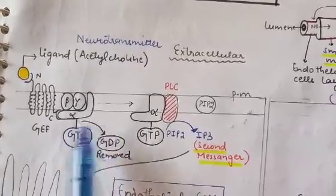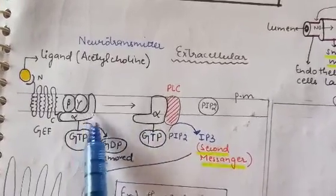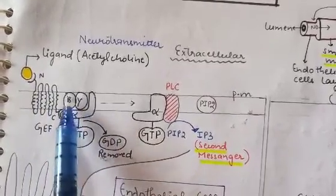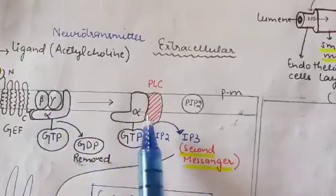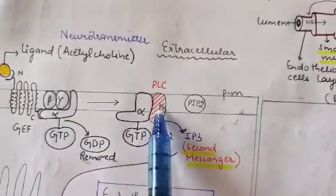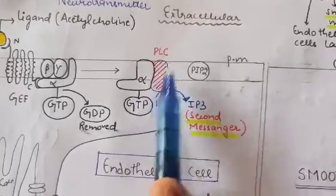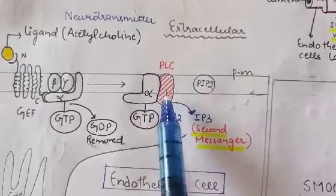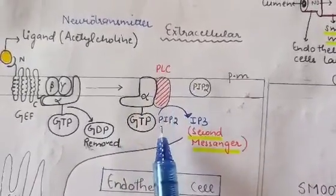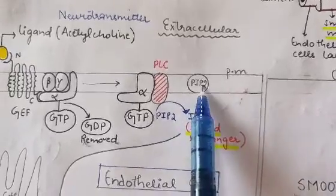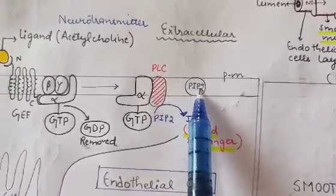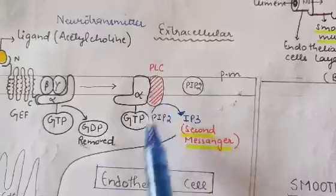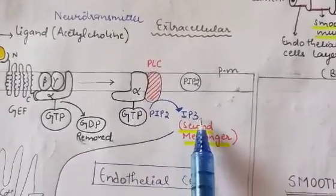Once the alpha subunit is activated it dissociates. The beta-gamma subunits exist as a dimer, and the entire complex dissociates from each other. The activated alpha subunit then binds to the effector molecule, which in this case is phospholipase C (PLC). This activated alpha subunit converts PIP2 — phosphatidylinositol 4,5-bisphosphate in the plasma membrane — into IP3. PLC as the active unit attacks PIP2 and converts it into IP3.